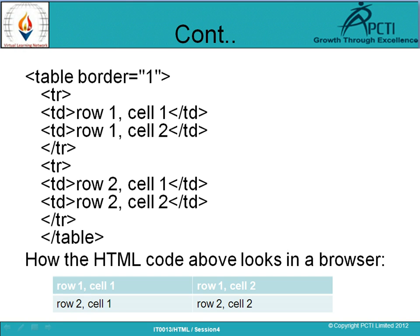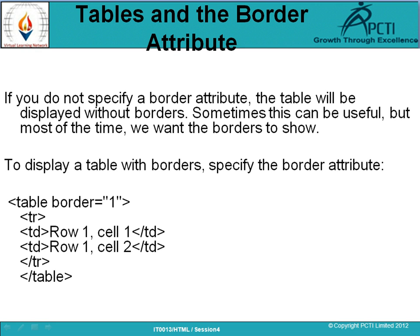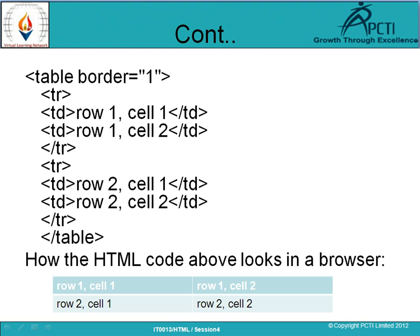Second TR is started. We have created the second cell — row 2, cell 1. Another TD for another column — row 2, cell 2 — then closing of TD and closing of TR. After that, closing of table tag.